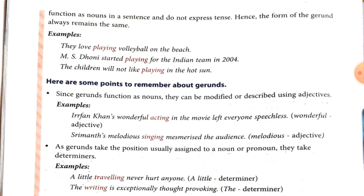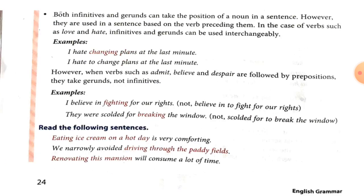Second: the writing is exceptionally thought-provoking — here, what is 'the'? A determiner. Now, third rule: both infinitive and gerund can take the position of a noun in a sentence. However, they are used based on the verb that precedes them. In the case of verbs such as love or hate, infinitive and gerund can be used interchangeably.